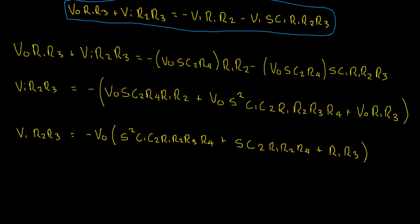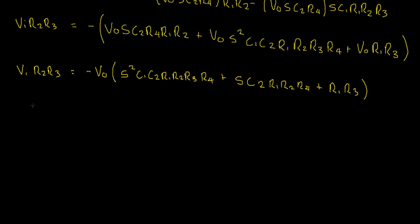Okay guys, we're getting very close now. Let's divide through by negative, and then the term inside our brackets, and let's also divide through by VI. That gives us VO divided by VI. I've just swapped the sides as well, just to make it look a little bit more standard. Equals R2 R3 divided by our negative, don't forget that. And then as the denominator, S squared C1 C2 R1 through R4, plus our S term, which is simply S C2 R1 R2 R4, plus R1 R3. Okay guys, and that is it, that is our final answer.